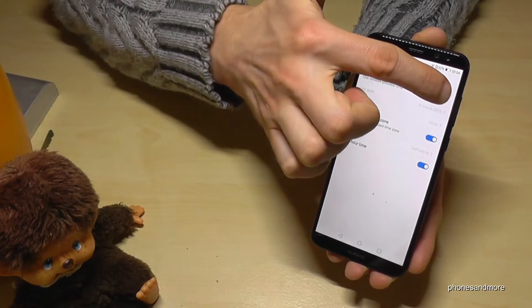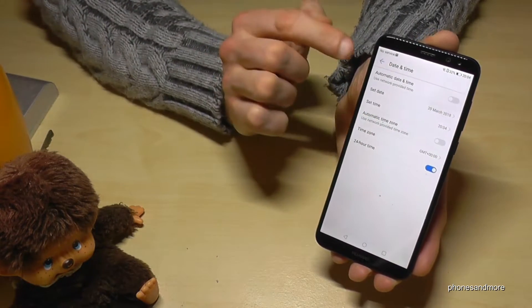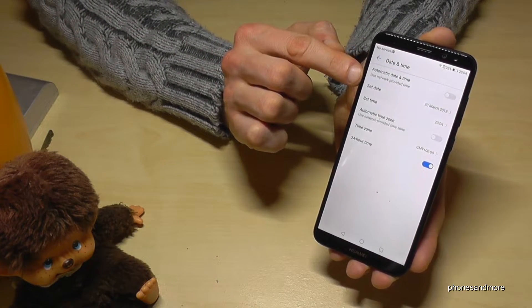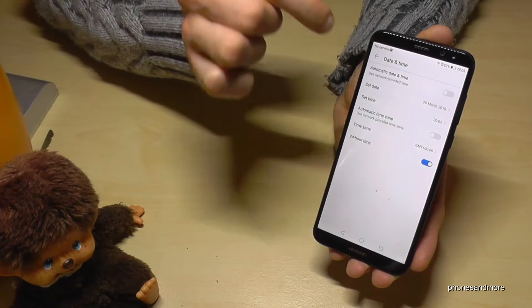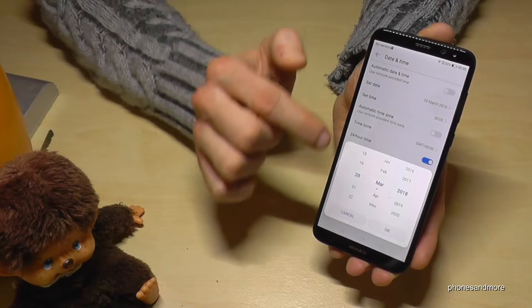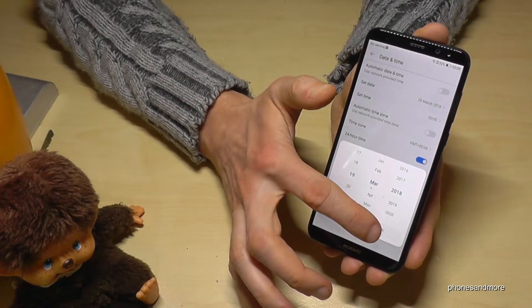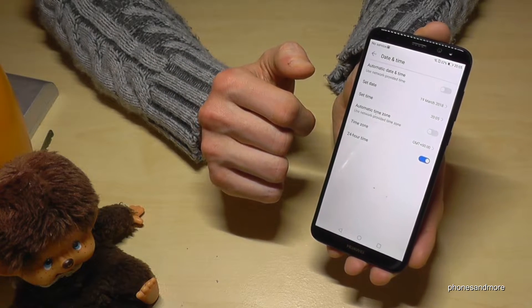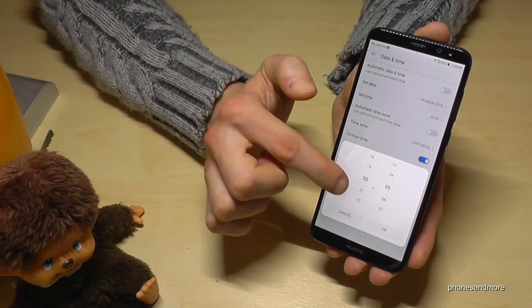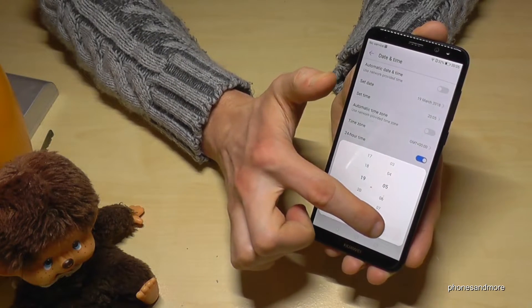Otherwise, in case you don't have it set up automatically, you can disable it and then you can set up the date. Maybe at first, we have the 20th of March or maybe the 19th. Let's go back one day. And the time, same thing, just choose the time here. Let's go back one hour.